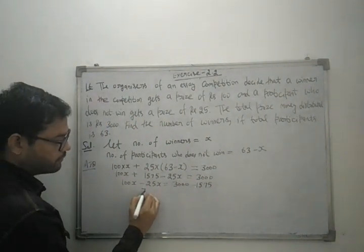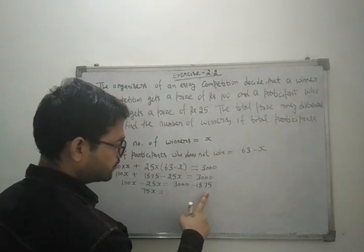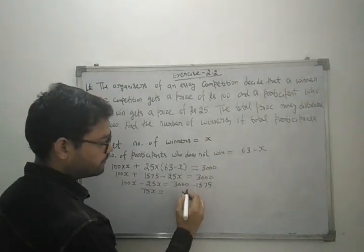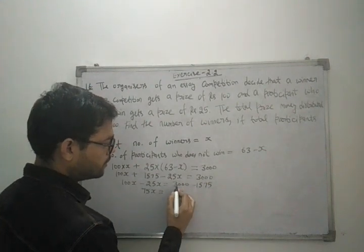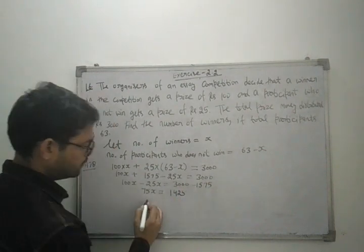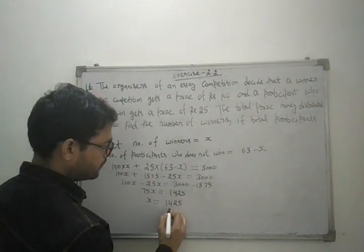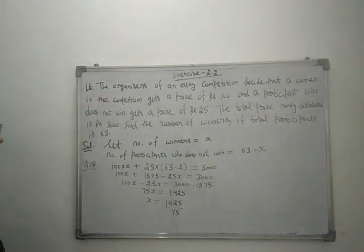So 100 minus 25 which becomes 75x. That is equal to... 3,000 minus 1,575 is 1,425. So x equals 1,425 upon 75.